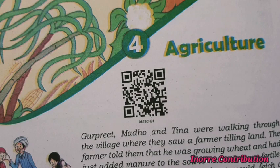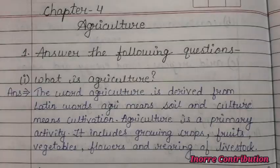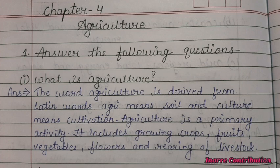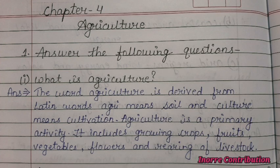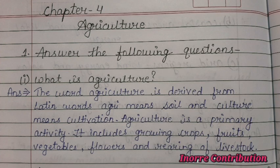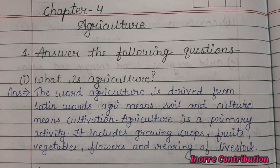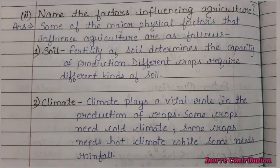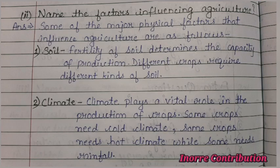Class 8 Social Science Geography, Chapter 4: Agriculture. First question: What is agriculture? The word agriculture is derived from Latin words — 'agri' means soil and 'culture' means cultivation. Agriculture is a primary activity. It includes growing crops, fruits, vegetables, flowers, and rearing of livestock.